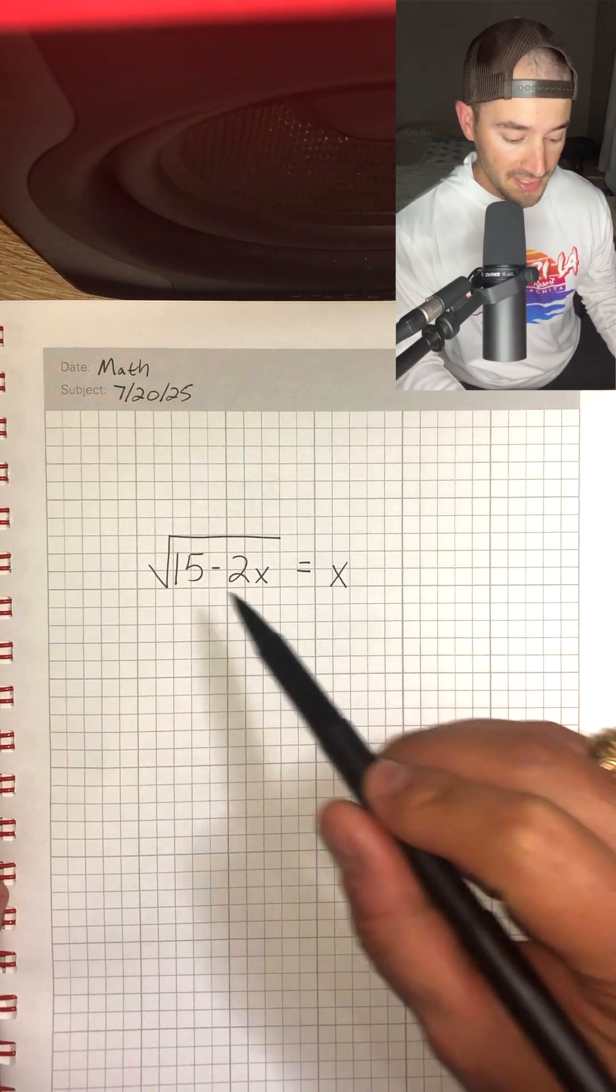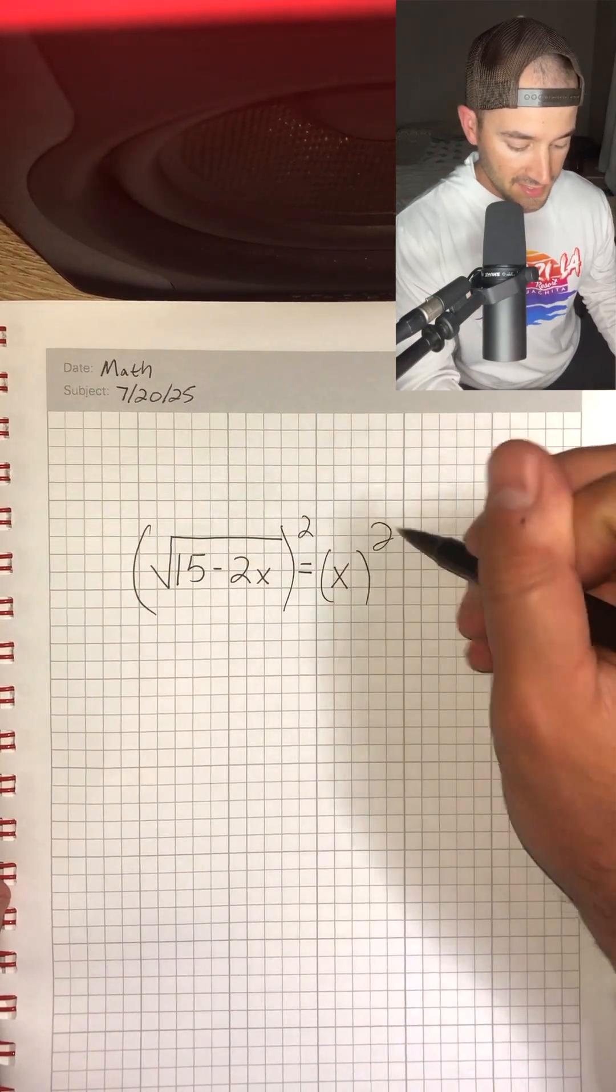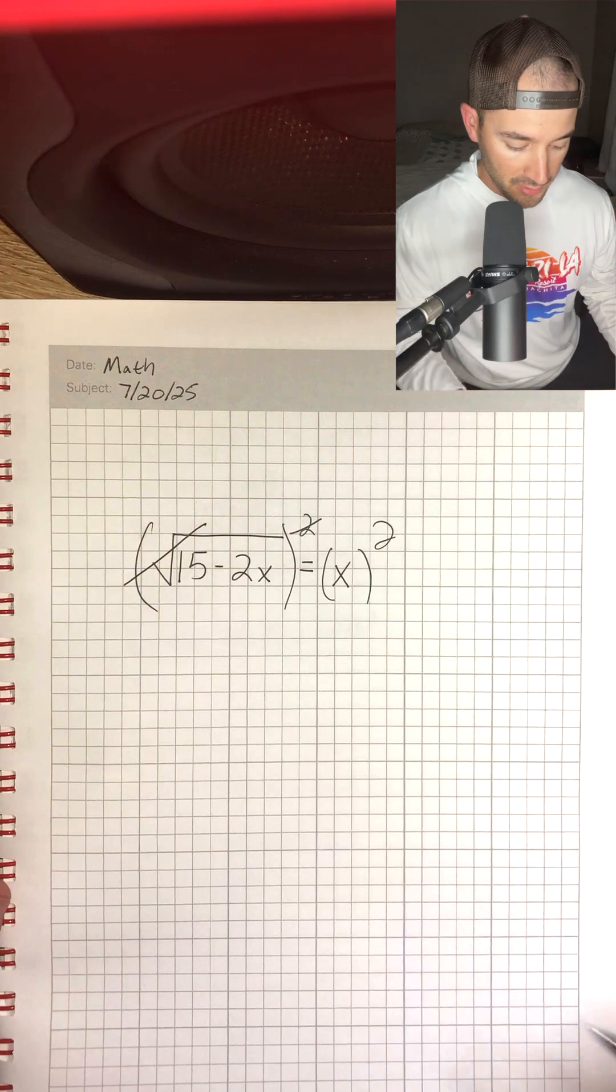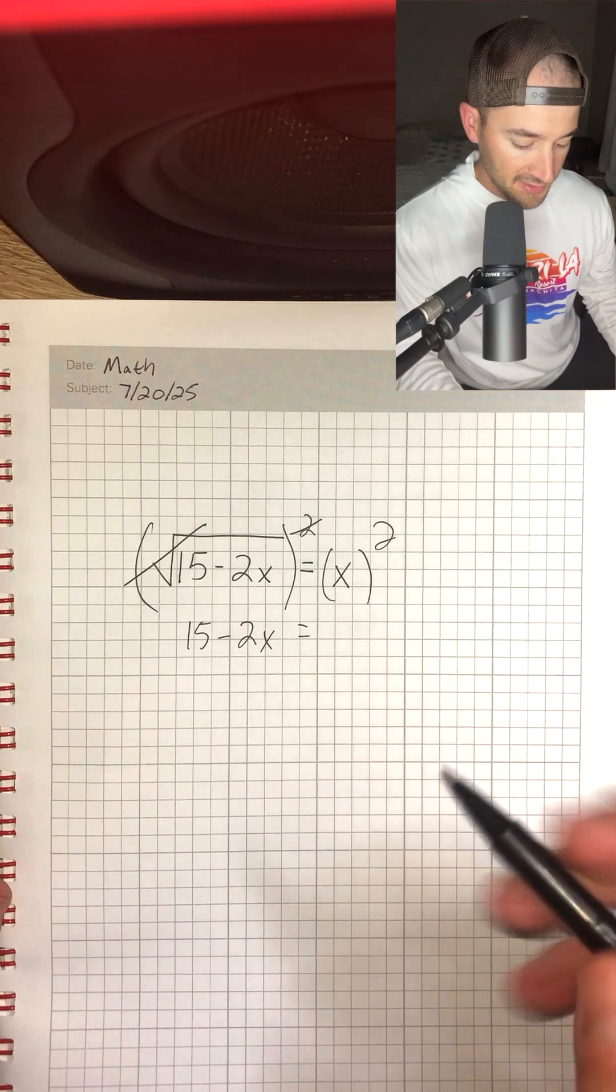The first thing we're going to do is cancel out our square root by squaring both sides. That's going to cancel out that part and leave us with 15 minus 2x is equal to x squared.